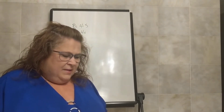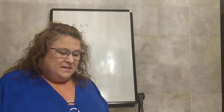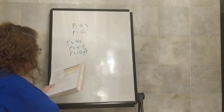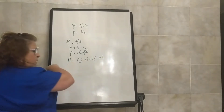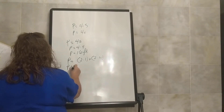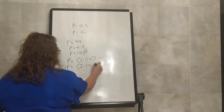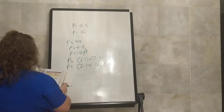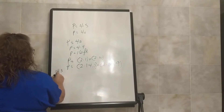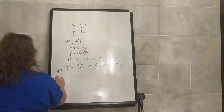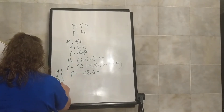Letter B: Ms. Wright had the children measure their rectangular classroom. They found the length to be 14.3 yards and the width to be 10.9 yards. Find the perimeter of the classroom. So the perimeter of our rectangle is going to be 2 times the length plus 2 times the width. Perimeter equals 2 times 14.3 plus 2 times 10.9. When we multiply them out, 14.3 times 2 equals 28.6.